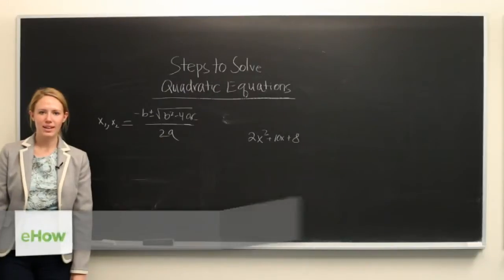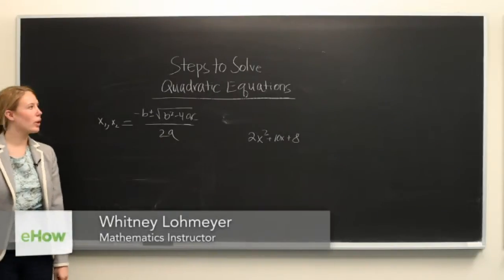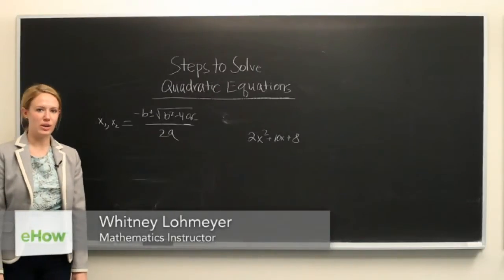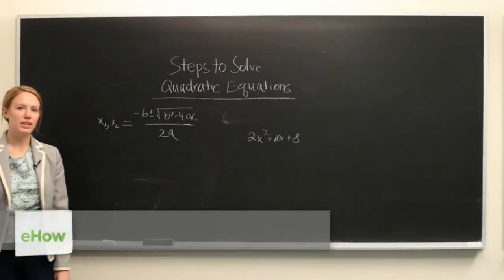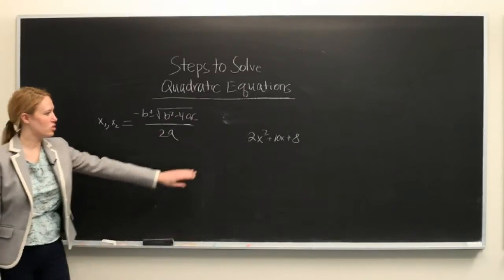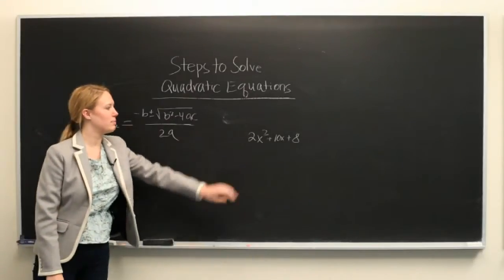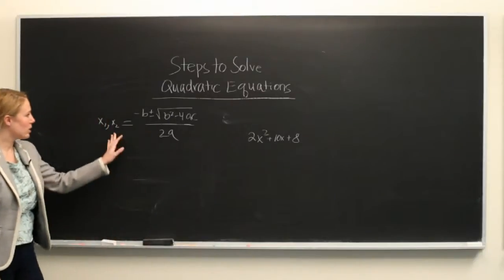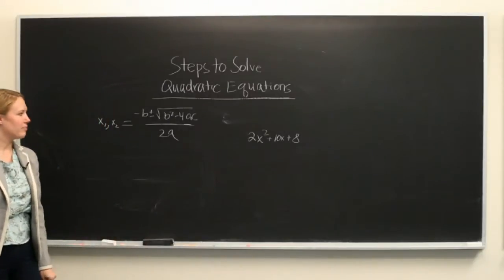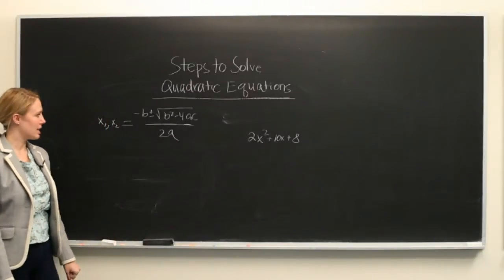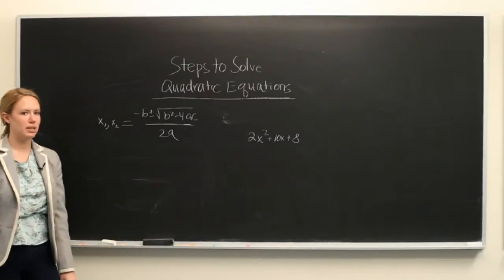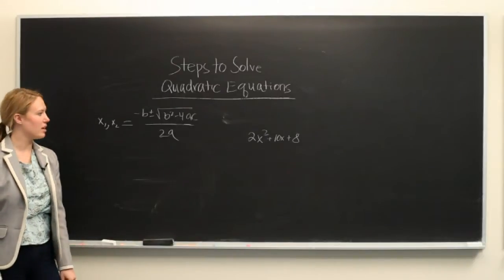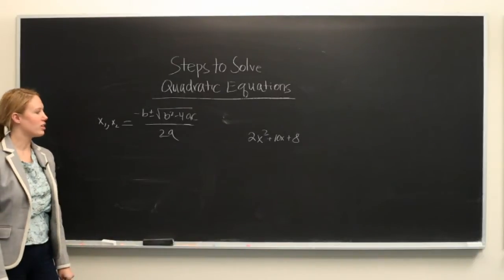Hello, my name is Whitney, and this video is going to explain how to solve using the quadratic equation. The example we're going to be looking at is 2x squared plus 10x plus 8, and we're going to be using the quadratic equation, which is negative b plus or minus the square root of b squared minus 4ac all over 2a.